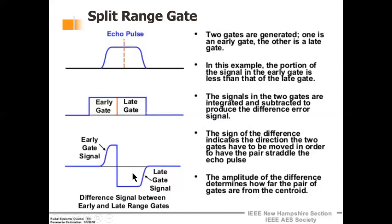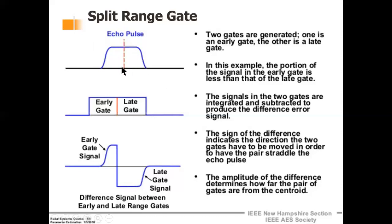To reduce the error signal, we ensure the two gates are aligned. The difference signal tells how well aligned the gates are with the echo pulse. The sign of the difference signal indicates the direction the gates must be moved to straddle the echo pulse and exactly track the desired target. This range gating allows a single target to be isolated, rejecting all unwanted signals and ultimately improving the signal-to-noise ratio by eliminating noise from other ranges.